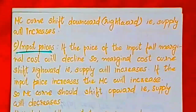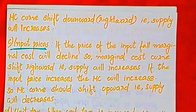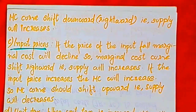The third factor is the price of inputs. If the price of the input falls, marginal cost will decline. MC will also decline, and the supply curve will shift rightward — meaning supply increases.